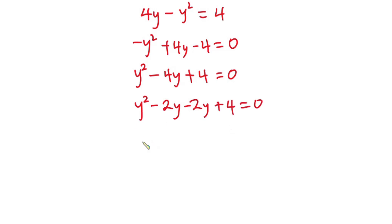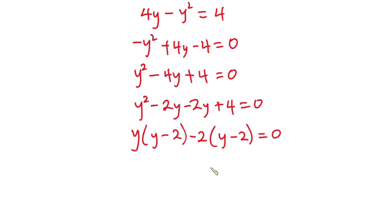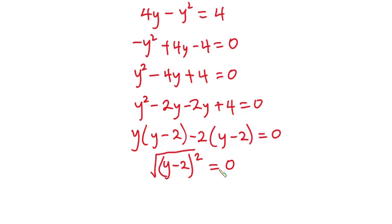From here, factoring: take y from the first two terms to get y times y minus 2, then take negative 2 from the last two terms to get negative 2 times y minus 2. This gives us y minus 2 squared is equal to 0. Taking the square root of both sides, we get y minus 2 is equal to 0.